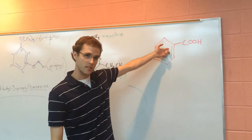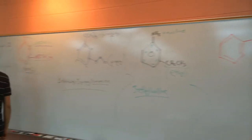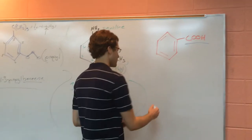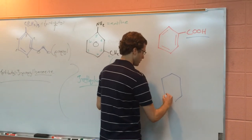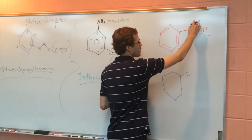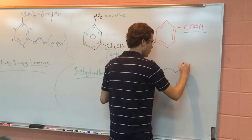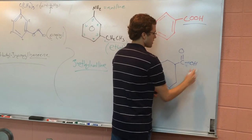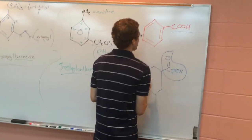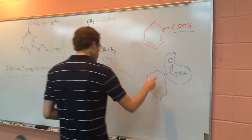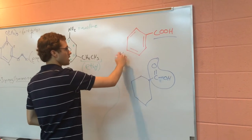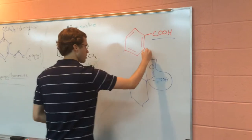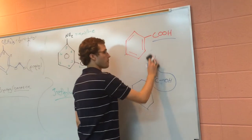There's only one group attached to this benzene: COOH, which we should recognize as a carboxylic acid. Let's draw out the full expanded structure — we have our carbon, and the two O's aren't actually bonded to each other: one is double-bonded to the carbon and the other is bonded with a sigma bond, with an H. That's our carboxylic acid functional group, and when we just have this by itself on a benzene, this is going to be benzoic acid.